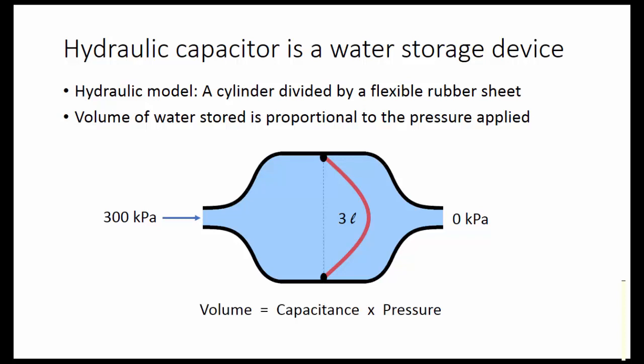The volume is equal to the capacitance times the pressure. The capacitance is the constant of proportionality. In this case, we have 3 liters equals 0.01 times 300 kilopascals.